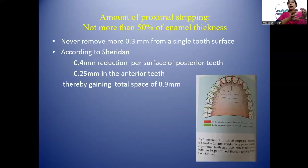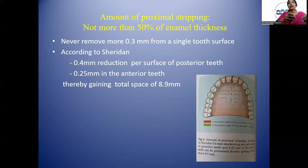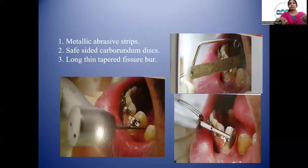Regarding the amount of proximal stripping that can be done: not more than 50% of the enamel thickness should be reduced. Never remove more than 0.3 mm from a single tooth surface. According to Sheridan, 0.4 mm reduction per surface is done for posterior teeth and 0.25 mm for anterior teeth, thereby gaining a total space of about 8.9 mm.